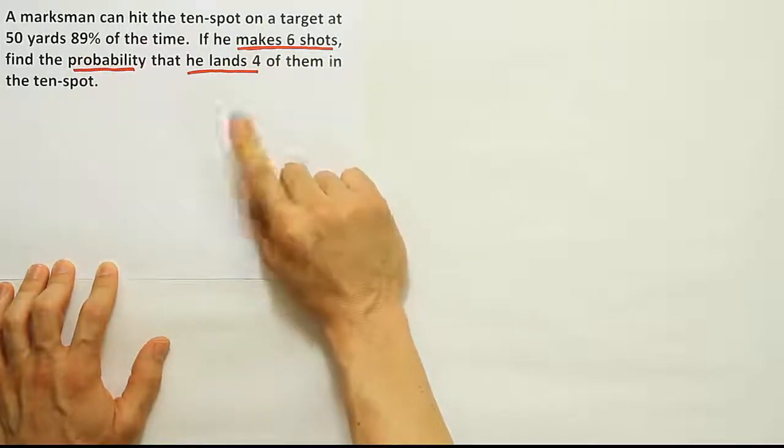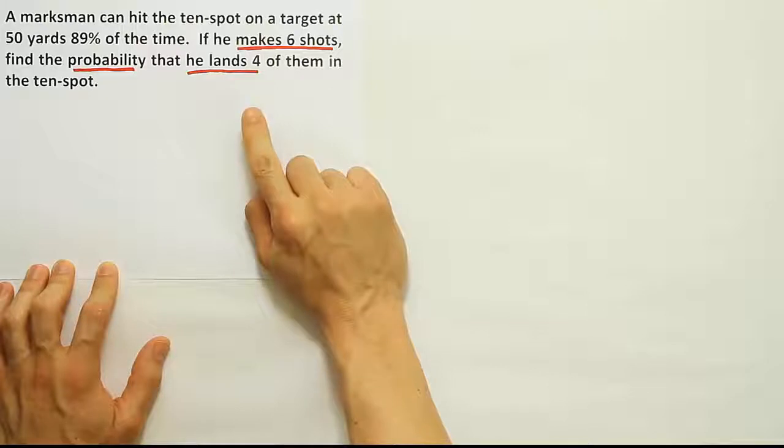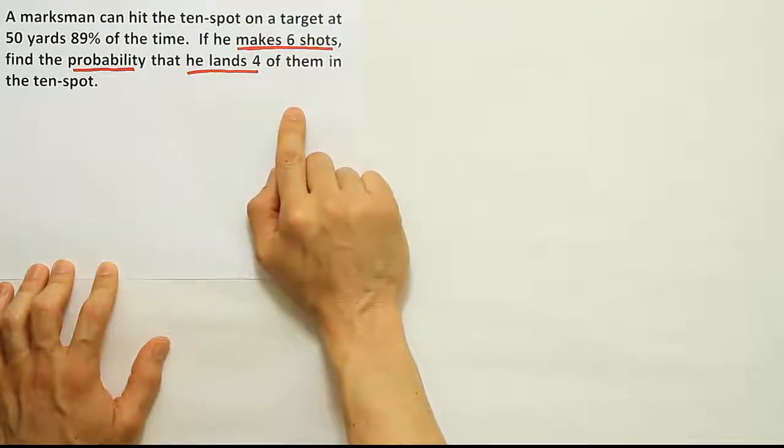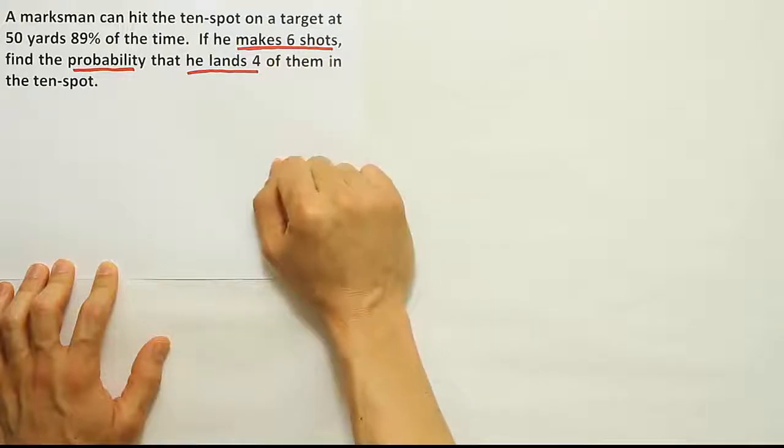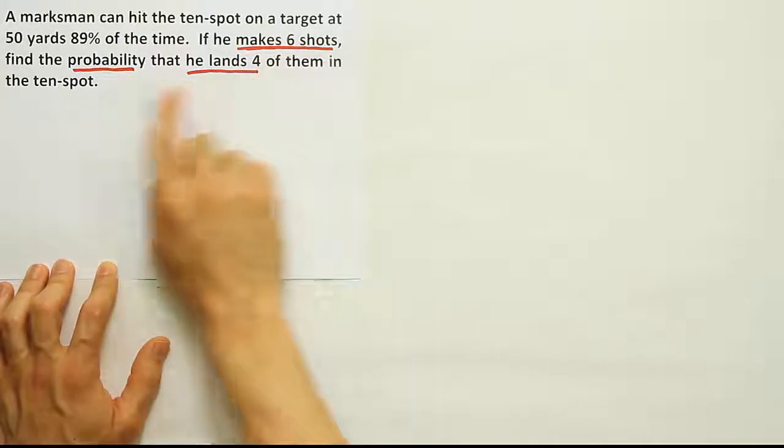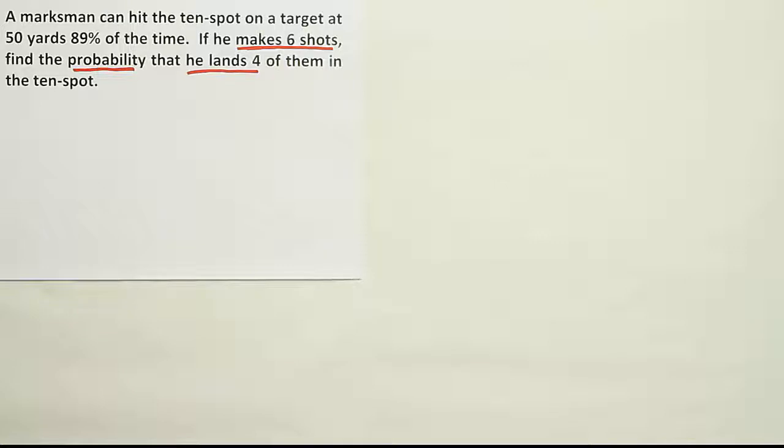Independent trials, we assume that one shot would not be affected by another shot. That may not actually be true, but I think it's a fair assumption. If you make it, you should be okay. And then finally, of course, we're going to count the number of successes, four of them landing in the 10th spot in this case. X should count the number of successes.